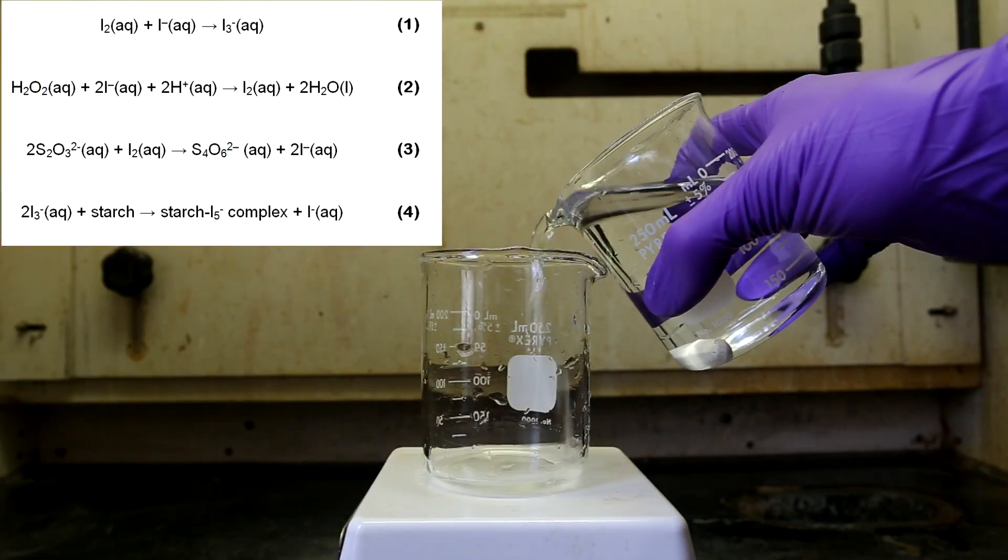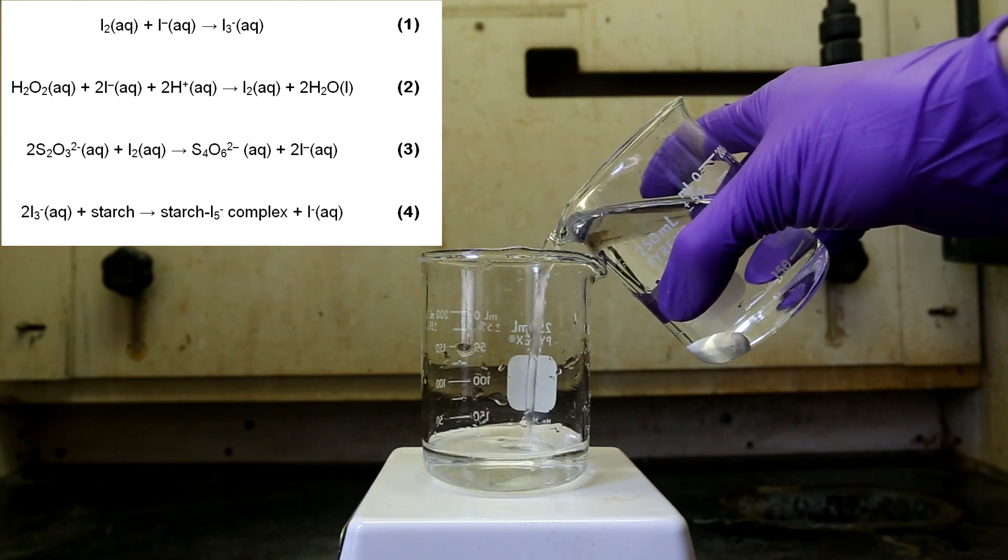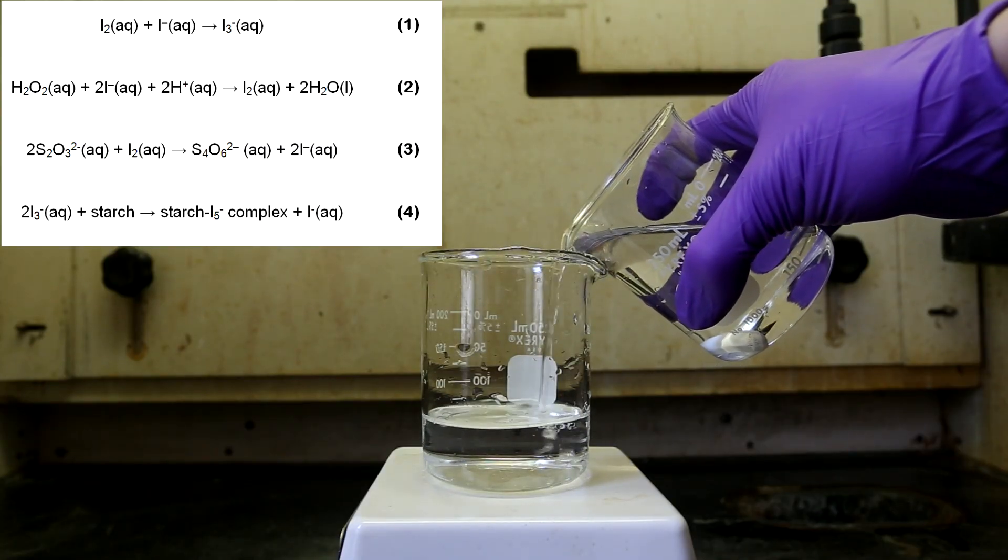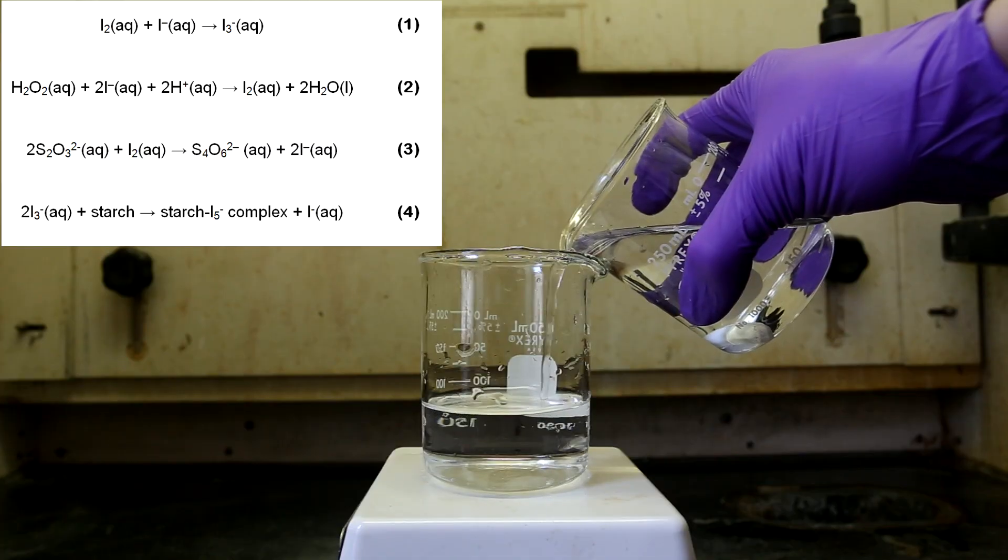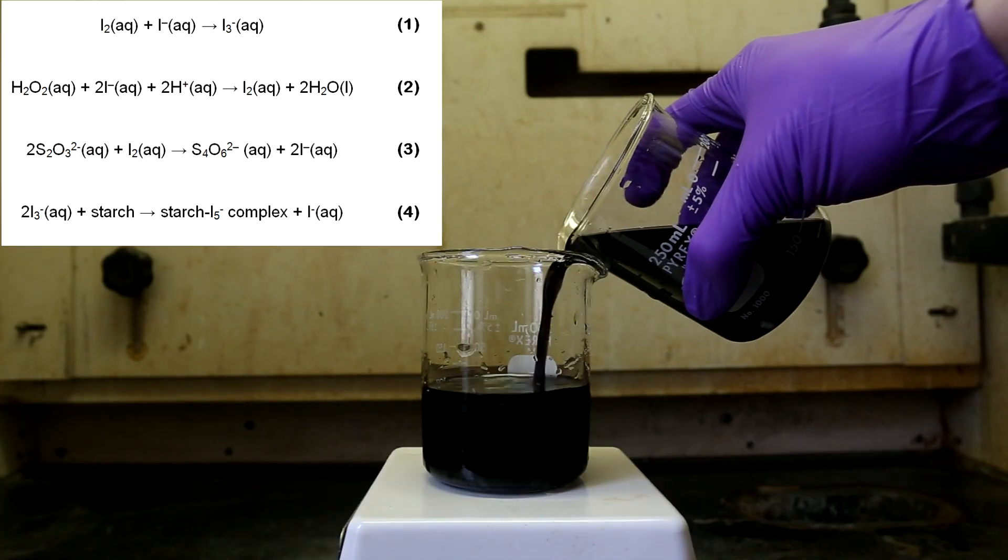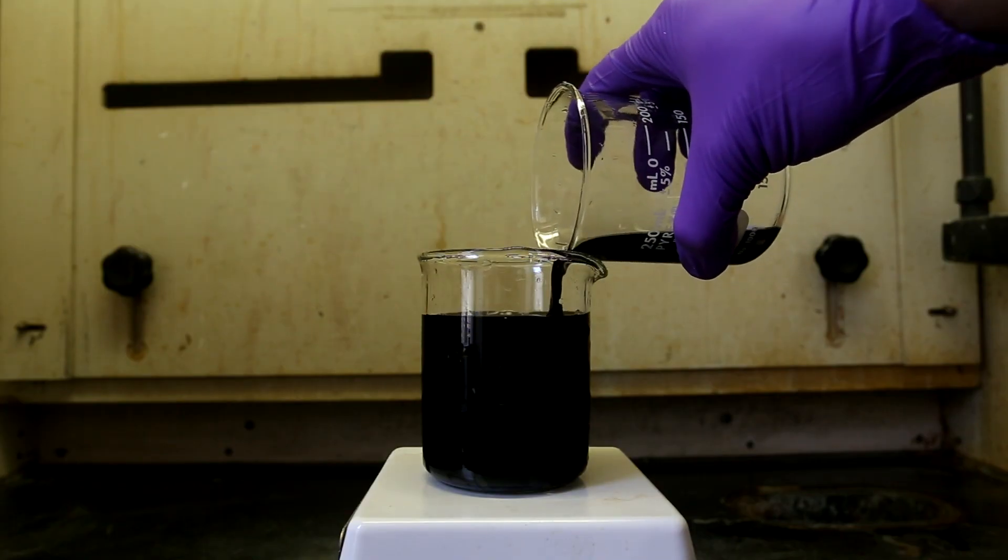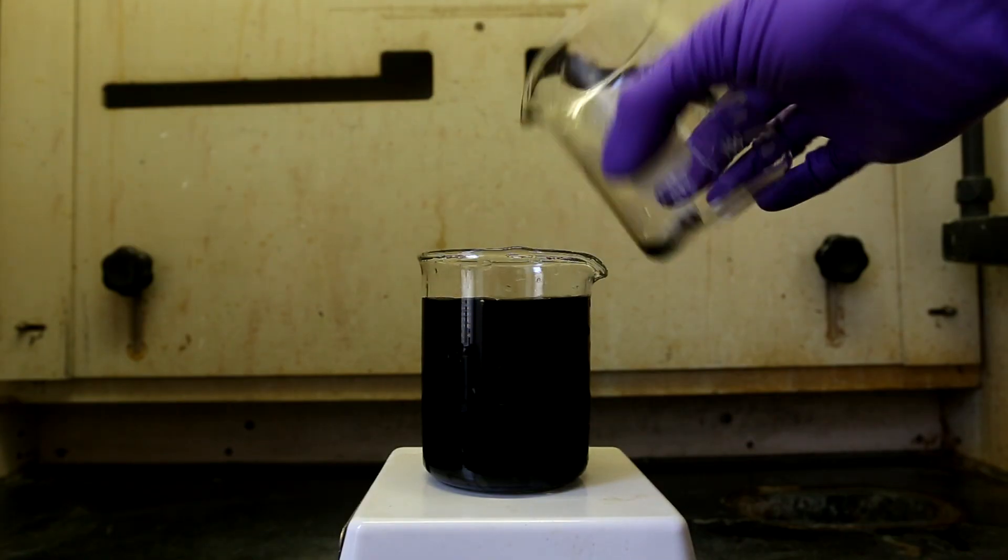The triiodide then reacts with starch to create the starch-pentaiodide complex, which has a characteristic blue-black color. You can see that by changing the amount of sodium thiosulfate that we use, we can change how long the iodine bounces back and forth with the iodide. And therefore, we can control how long it takes for the color to change.